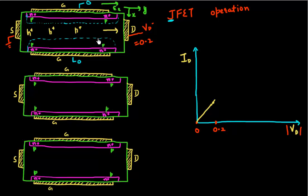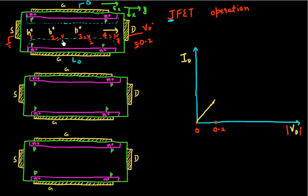If I think about how the potentials within this device are dropping: I'm applying minus 0.2 V at the drain, and this distributes linearly throughout the device. Marking equally spaced points along the channel, the voltages would be 3V/4, V/2, V/4, and close to 0 near the source. This is how it behaves when applying a small drain voltage.